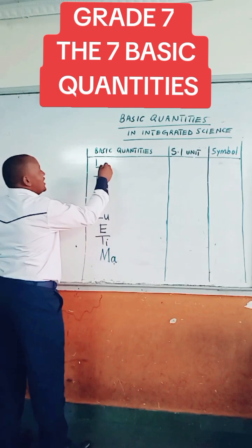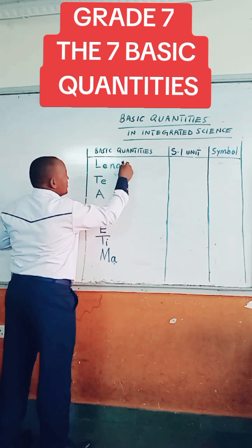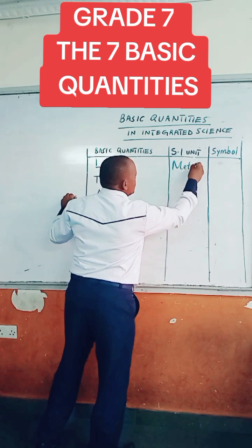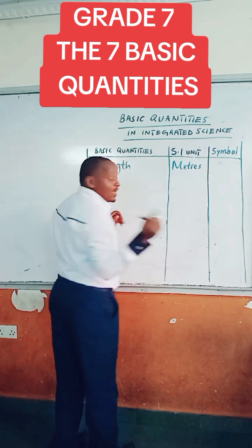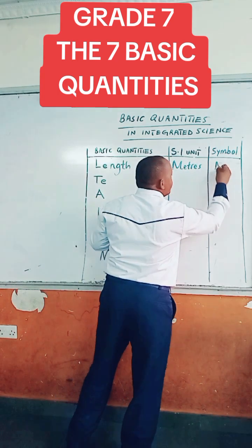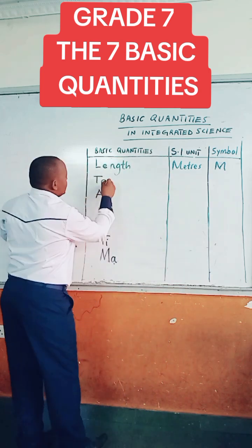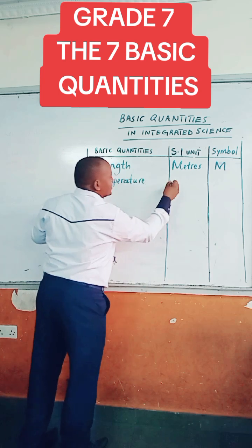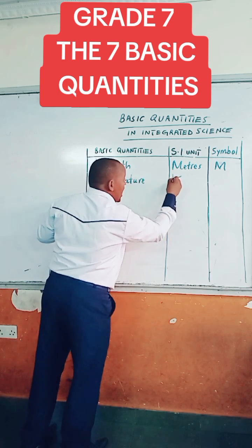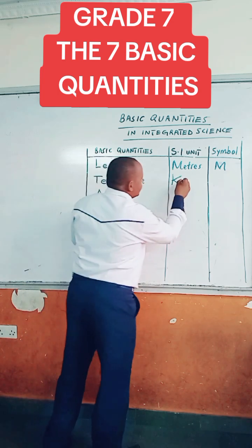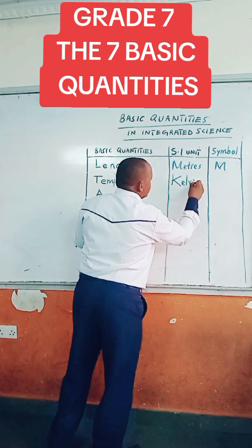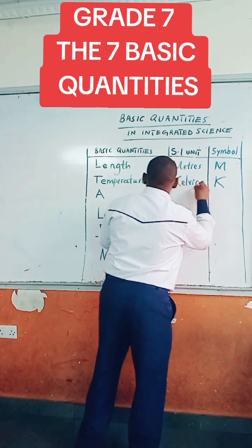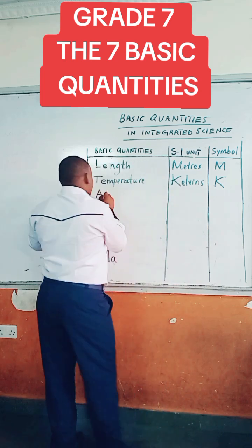Le for length. As a unit is meters, abbreviated as M. T is temperature. As a unit is kelvins, abbreviated as K. A is amount of substance.